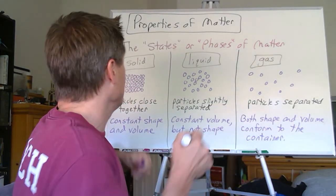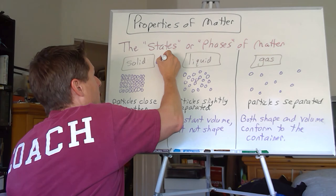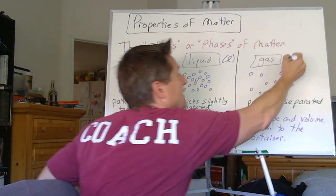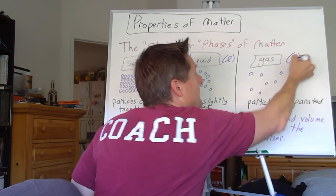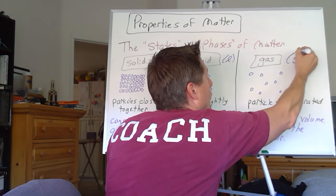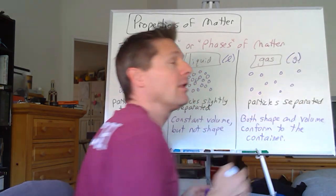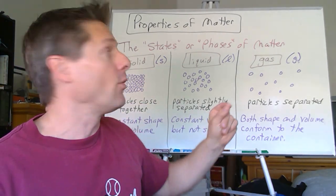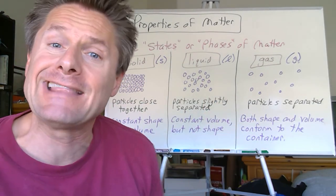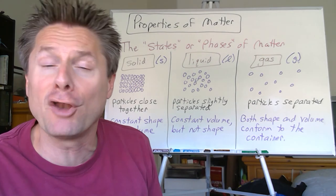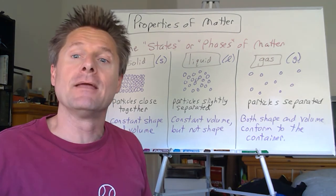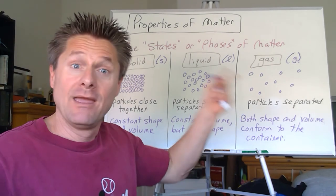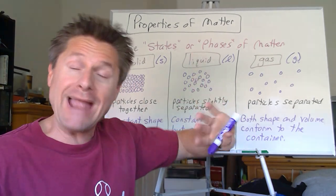Solid, liquid, gas — and a lot of times you'll see symbols used for these: an 's' in parentheses, an 'l' in parentheses, or a 'g'. Whenever we have some form of matter, we'll often put a parentheses with an s, l, or g to represent the state that it's in at that temperature and under the conditions stated. Now let's get into some properties, looking at things from both a macroscopic and a microscopic level.